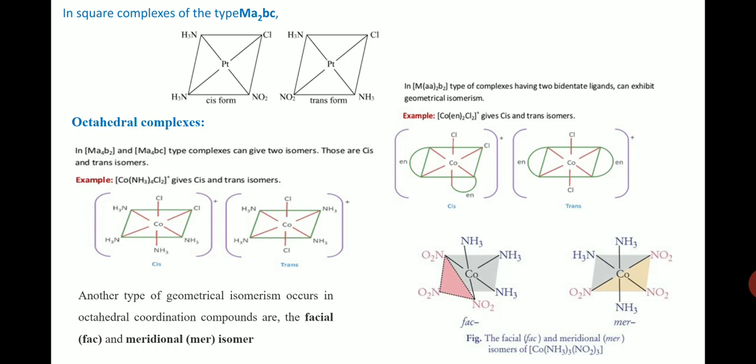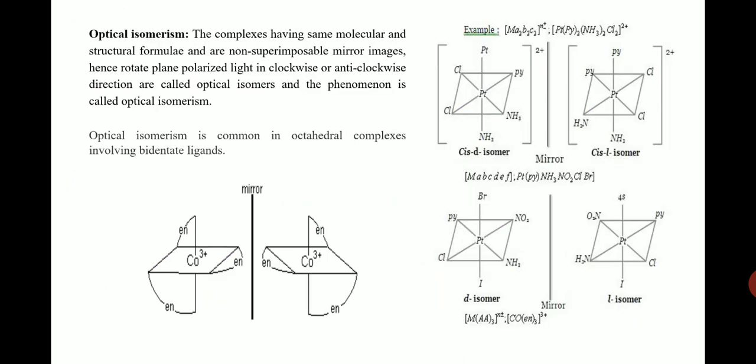In octahedral complexes of the type MA₄B₂, M is the metal, A₄ represents four identical ligands, and B₂ represents two identical ligands. Another type, MA₄BC, is also an octahedral complex that exhibits geometrical isomerism.